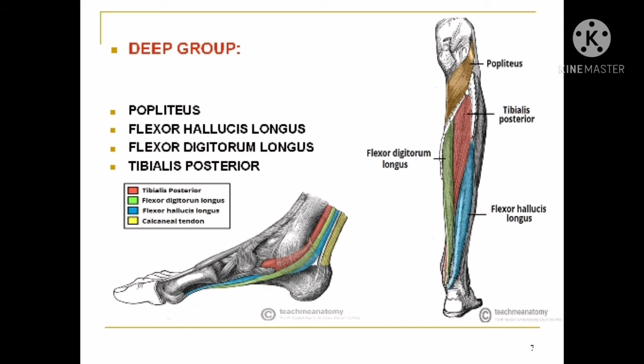The deep group contains the popliteus, flexor hallucis longus, flexor digitorum longus, and tibialis posterior muscles. The popliteus is a short muscle at the back. The remaining three are remembered by the acronym Tom, Dick, and Harry — Tom for tibialis posterior, Dick for digitorum longus, and Harry for hallucis longus. The tendons of all these muscles pass below the medial malleolus, underneath the flexor retinaculum in the tarsal tunnel, and enter the plantar aspect of the foot.